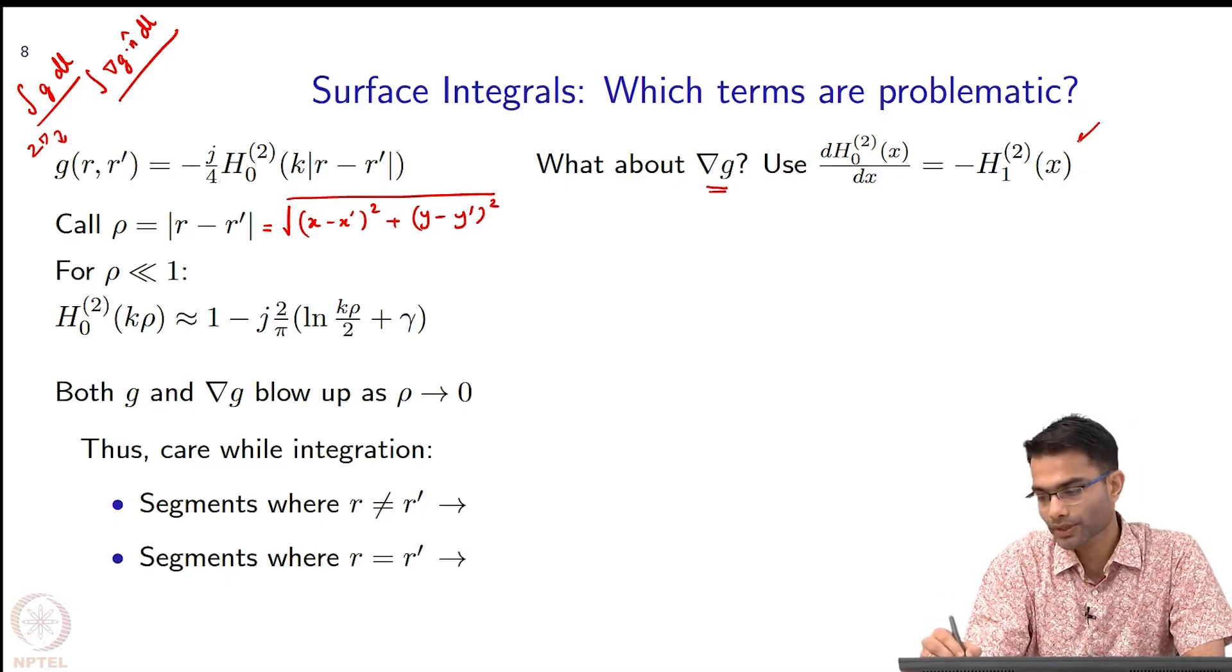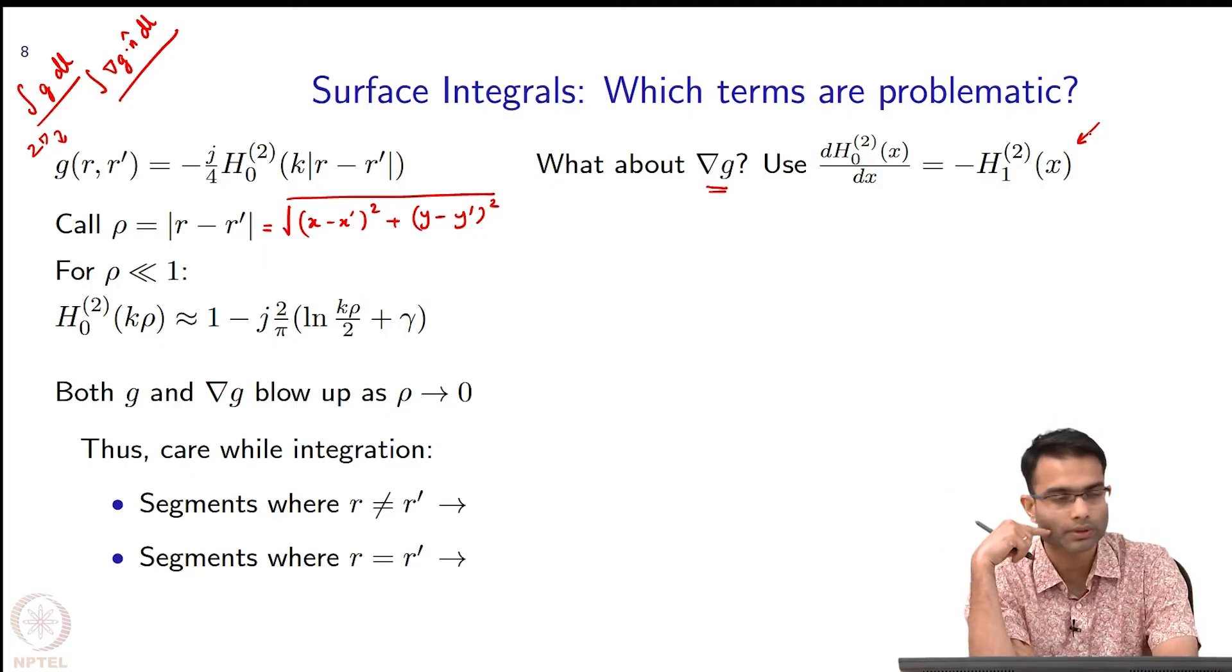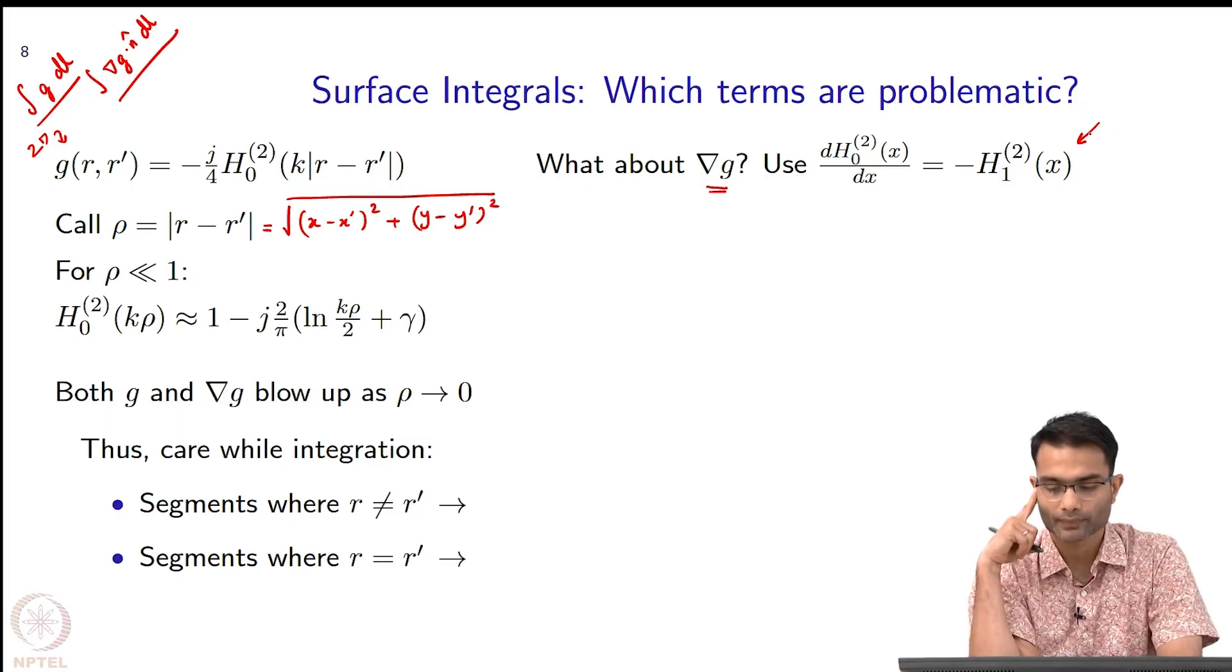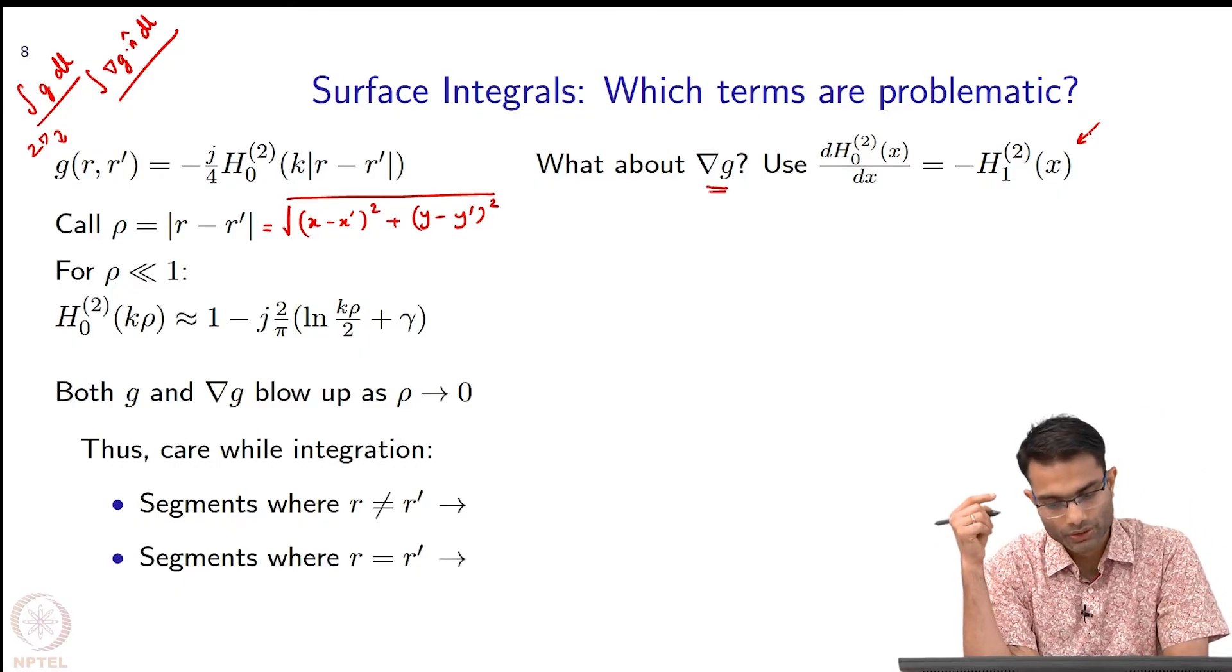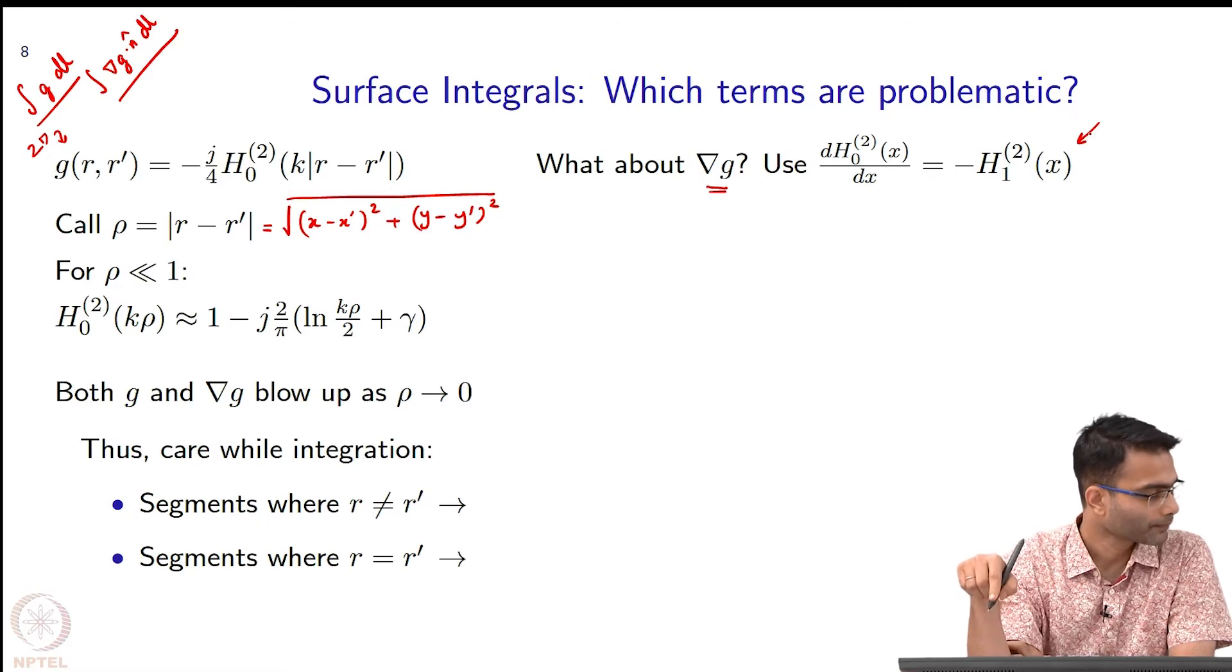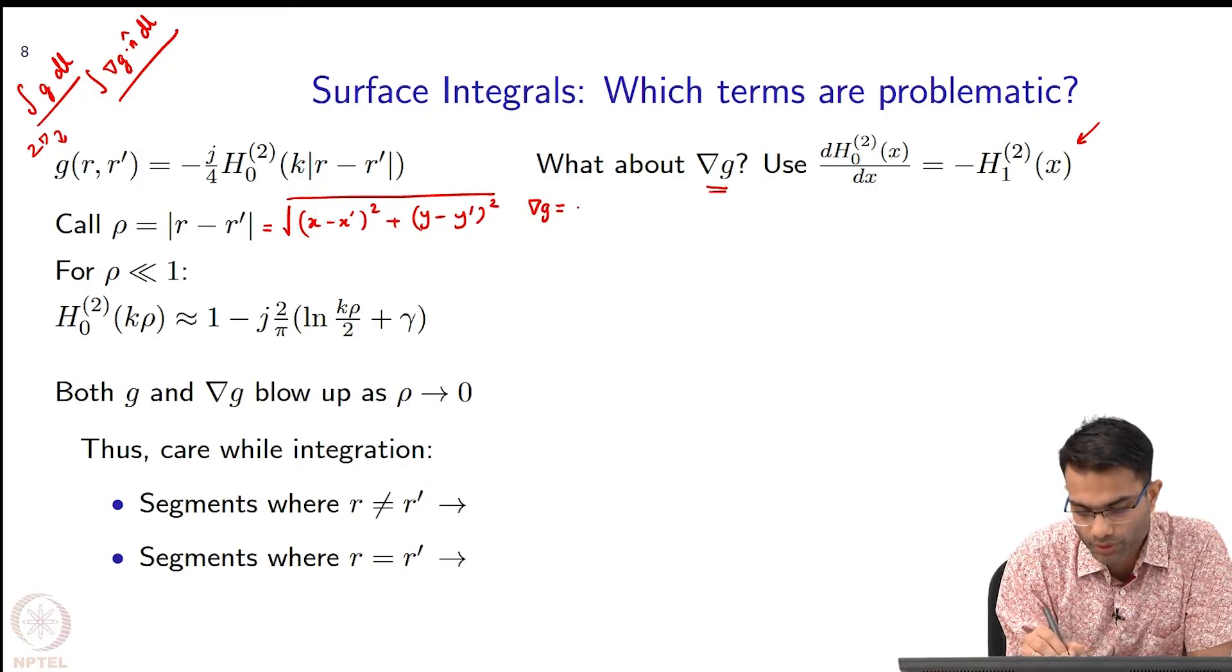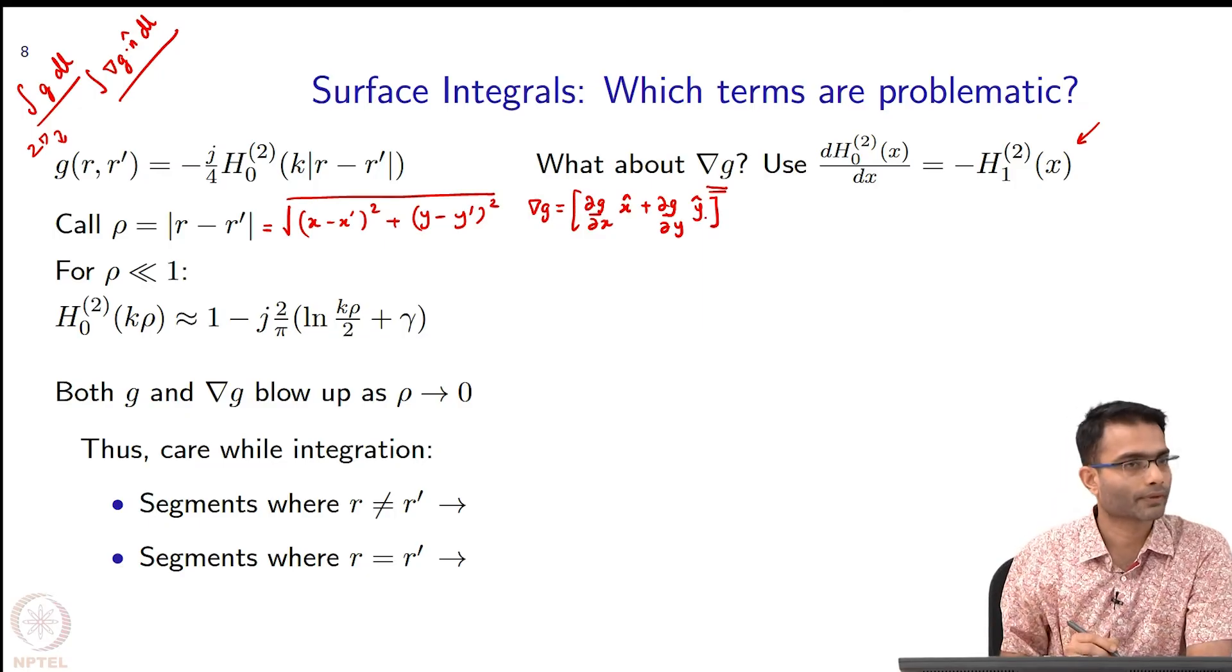Here is a fact: the derivative of Henkel 2 gives you Henkel 1. This is given to you. There are many properties of Bessel functions which we will use as we go ahead. Now, if I want to evaluate grad G, what do I do? I will just use this property. What is grad G now? Grad G using the definition: del G by del x x hat plus del G by del y y hat.